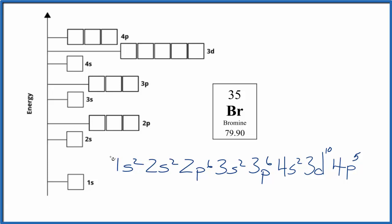So we start off 1s2, 2 electrons opposite directions. 2s2, 2p6, spread them out and then pair them up. 3s2, 3p6, 4s2.